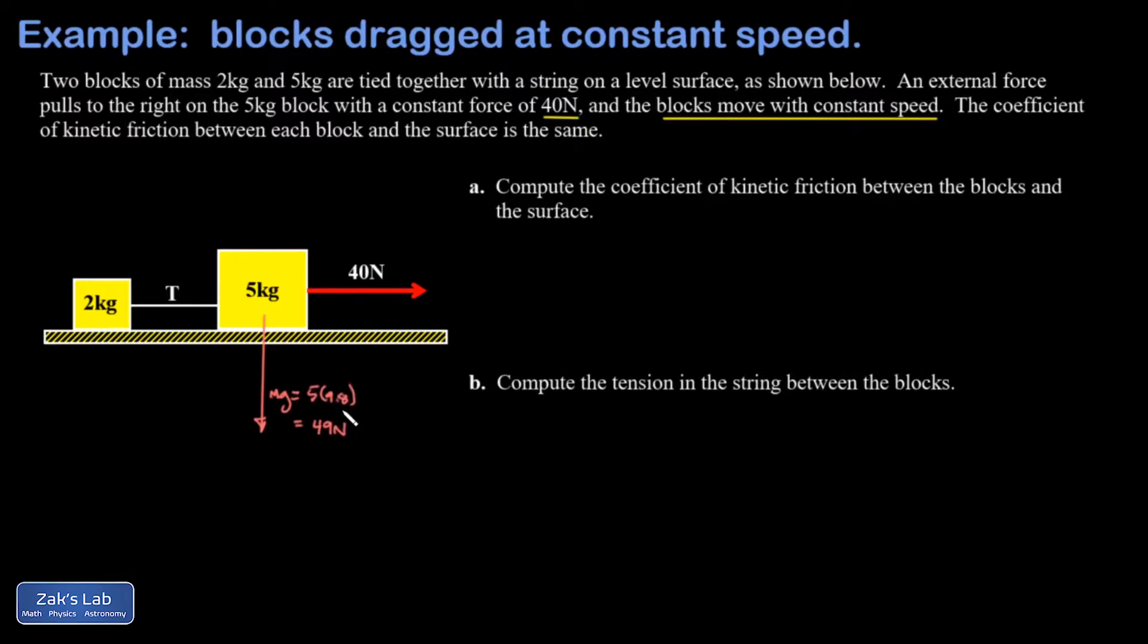Since there are no other forces tampering with the vertical direction, the normal force must also be 49 newtons. Because the block is sliding to the right over this surface, the force of friction points to the left and that's an unknown. I'll just call that fk5, kinetic friction force for the 5 kilogram mass.